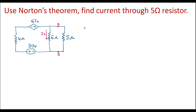In this video, let me consider one numerical on Norton's theorem. Use Norton's theorem to find the current through the 5 ohm resistor. This is the given circuit. Here we have a 5 ohm resistor and we are supposed to find I, that is the current through the 5 ohm resistor, using Norton's theorem.